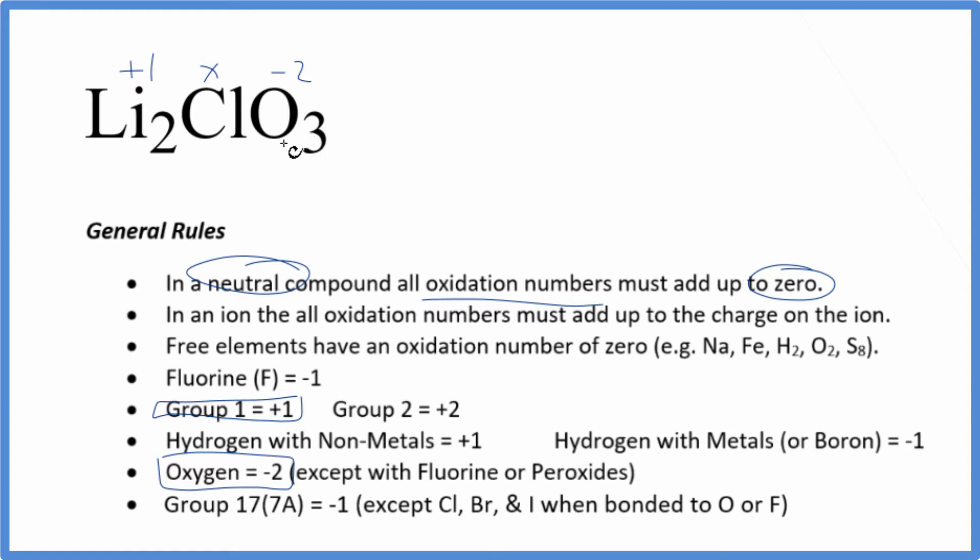All the atoms, if you add the oxidation numbers up, that'll be zero. So let's just set up an equation. Two times one, that's two. Plus, we don't know the chlorine, we only have one of those. And then three times minus two, minus six.